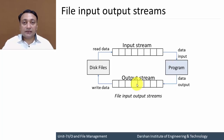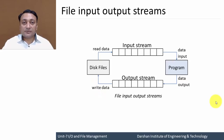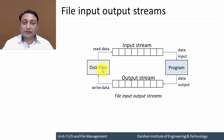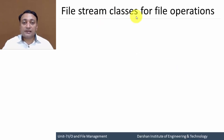The program will perform some operations and generate an output stream, which will be stored or written in disk files. So till now in every C++ program we have taken input from the keyboard and displayed output on the monitor, but here we are going to read input from a file and write output to a file. Let us discuss file stream classes.